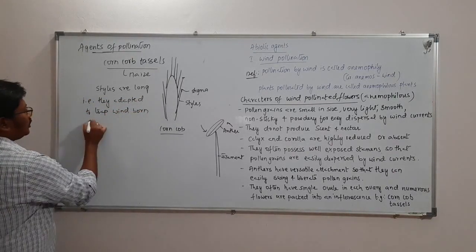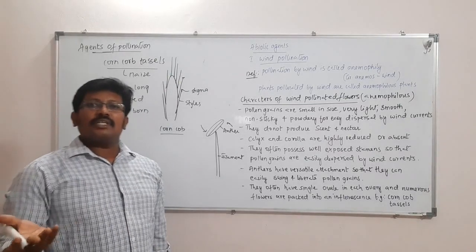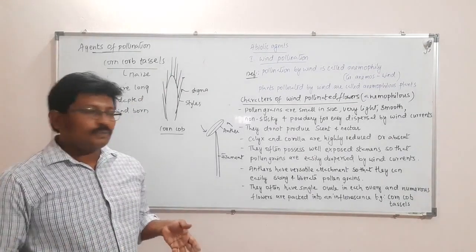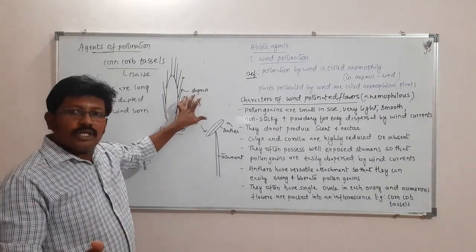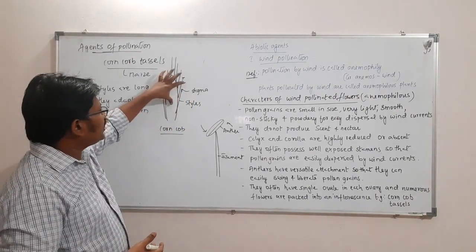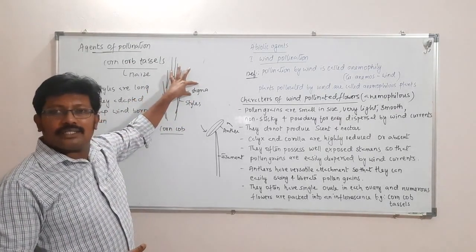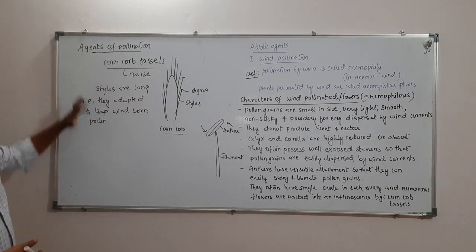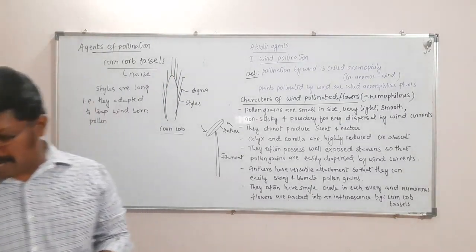Pollen grains are released into the wind, which carries them. To pick up those pollen grains, the styles must be very long with a sticky stigma at their tips. This is what we see in the corn cob as an example of wind-pollinating plants.